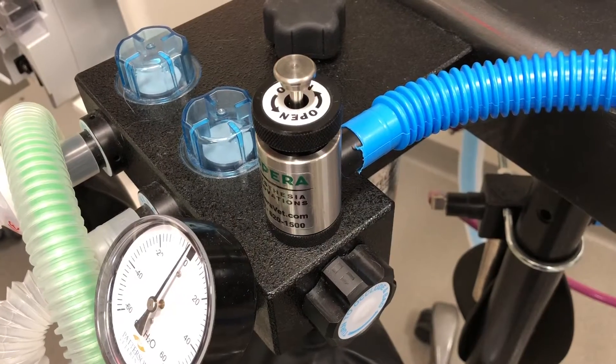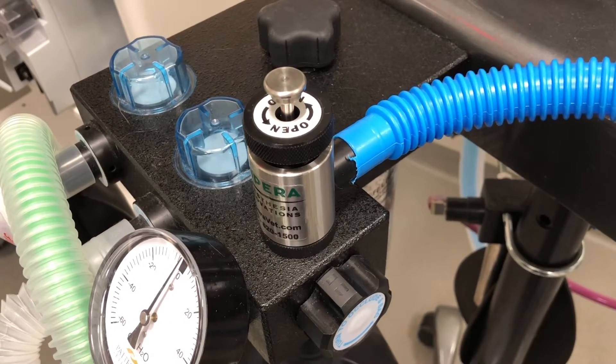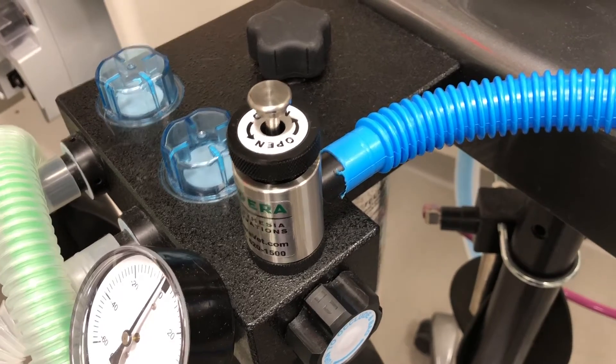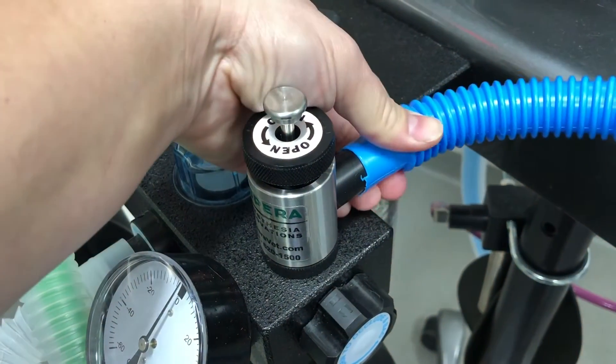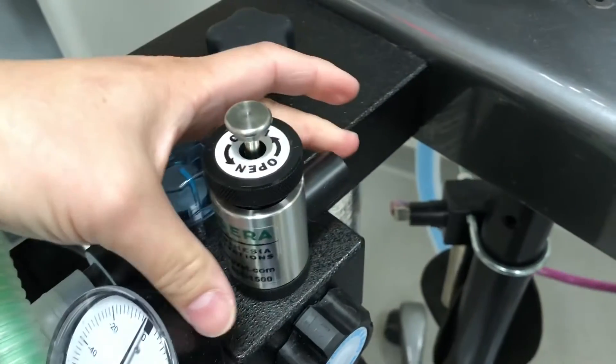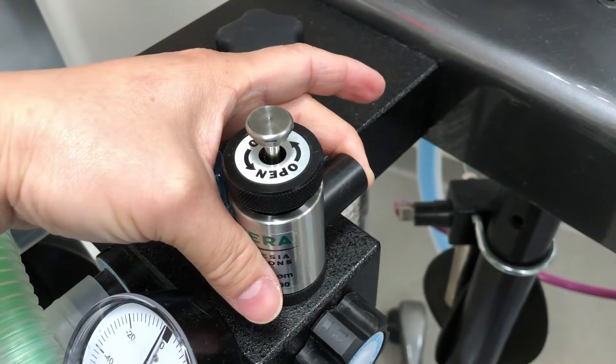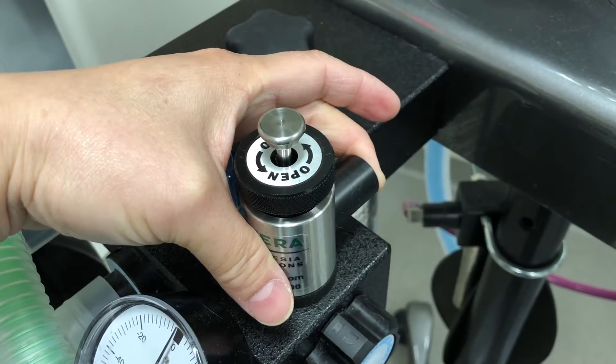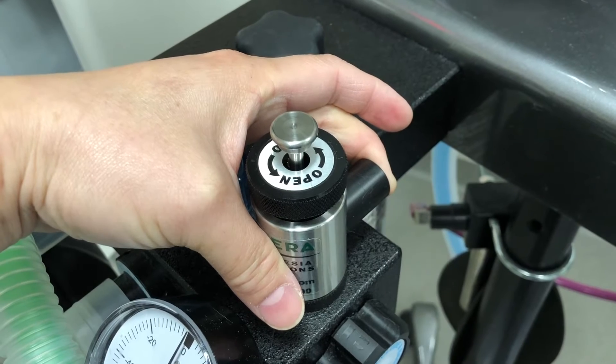Because of the safety mechanism of the Supira valve, it's going to require a new technique to pressure check your anesthesia machine. Remove the scavenge from the back and occlude the hole with your finger. Then you will be able to press the oxygen flush to pressure check your machine.